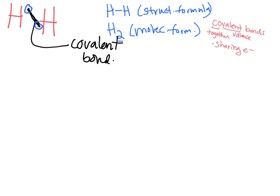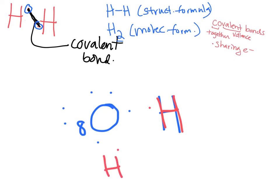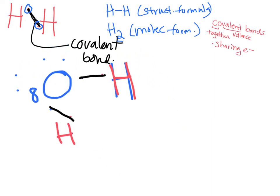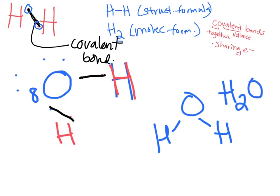Let's look at oxygen. Oxygen has an atomic number of eight, which means two in the first shell and six in the outer shell—so it's missing two electrons. If we bring in two hydrogens and share electrons between oxygen and each hydrogen, oxygen gets eight total electrons and each hydrogen gets two. We'd draw that as the structural formula with two single bonds, and the molecular formula H2O—which is water. These have all been single covalent bonds.